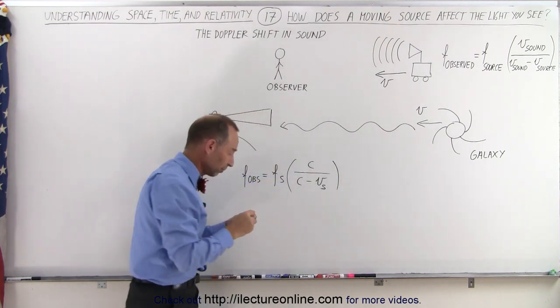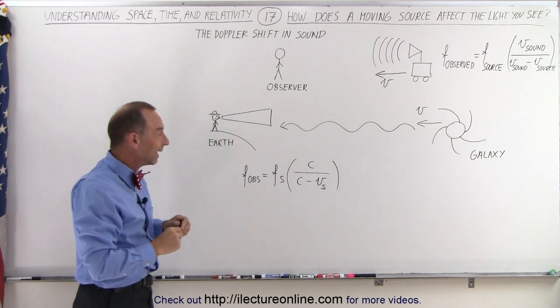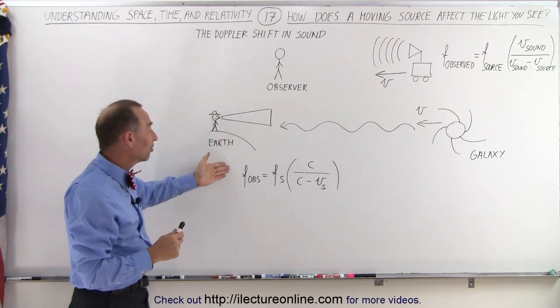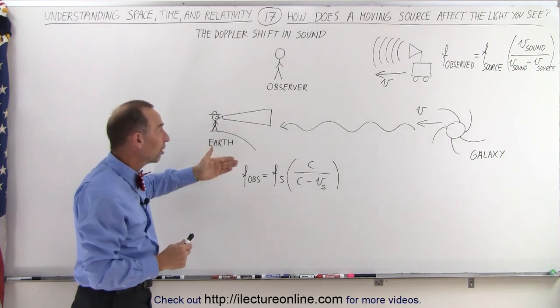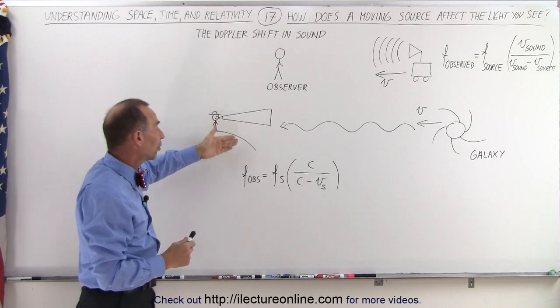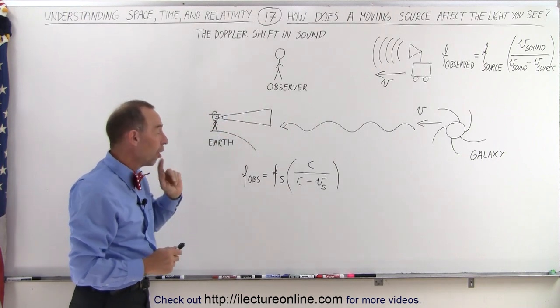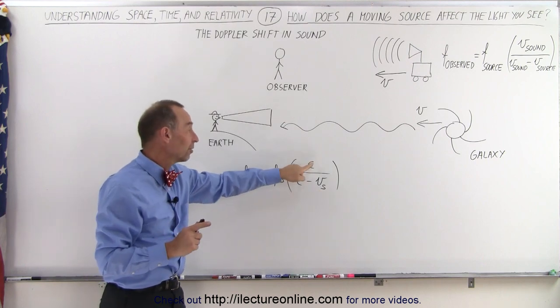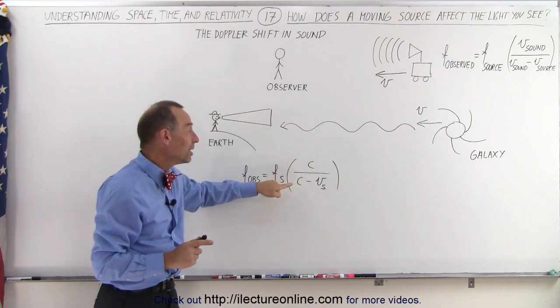And maybe I should write v sub s for velocity of the source. That is the equation that gives us the exact same relationship between the frequency observed and the frequency of the source, all depending upon the velocity of the source and the velocity of the waves in the medium.